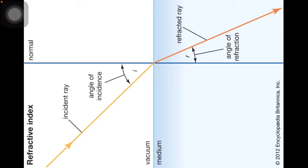Sine i by sine r is equal to a constant, and that constant is the refractive index of the second medium with respect to the first medium.